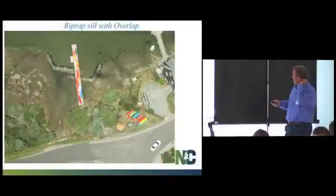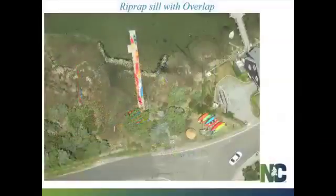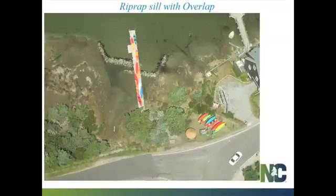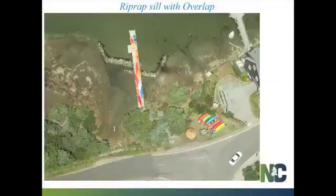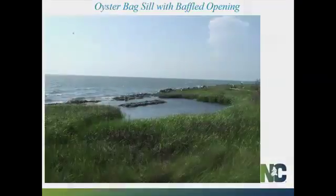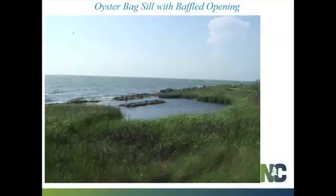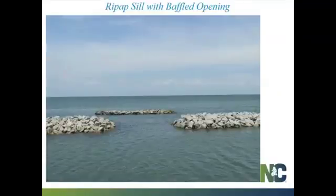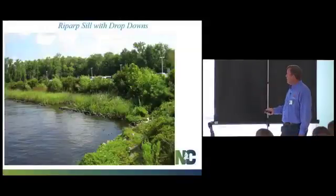An example sill from Maul used an overlap design, armoring a vertical escarpment at the toe with about five feet between toe-to-toe. An oyster bag sill example used a baffle placed on the backside of the sill alignment. Another large structure facing the entire Pamlico Sound had an offshore baffle with an opening of about 30 feet. A drop-down design with no baffle simply lowers the sill height to allow water flow.